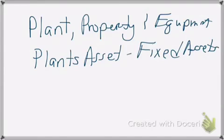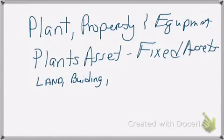Items in this section include land that you're currently using, buildings currently used in operations, and equipment currently being used in operations. All of these things would be listed in this section.